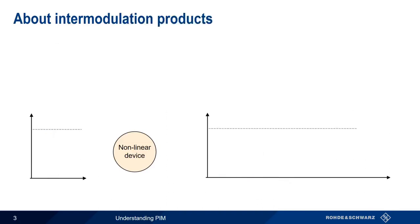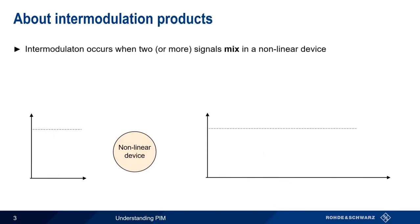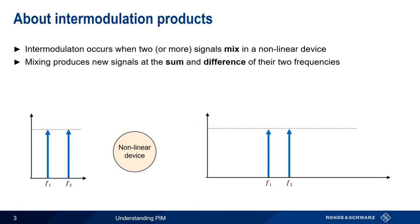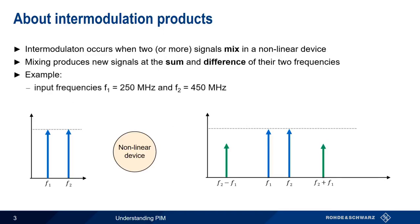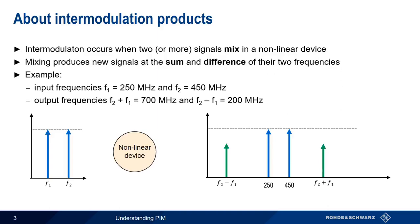In addition to harmonics, nonlinear devices also create something called intermodulation products. Unlike harmonics, which can be created by a single signal, at least two signals are needed for the creation of intermodulation products. When these two signals mix together in a nonlinear device, they produce signals, or products, at the sum and difference frequencies. For example, with tones at 250 MHz and 450 MHz, mixing produces tones at 700 MHz and 200 MHz.